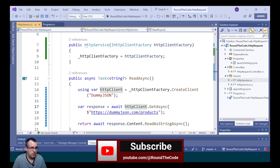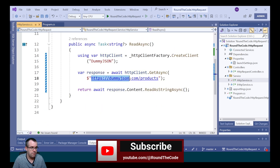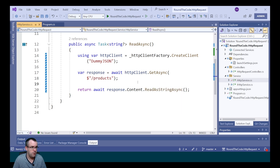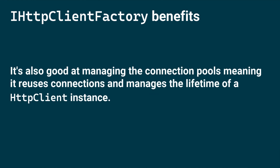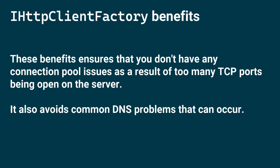We now only need to call the relative URL when making requests. IHttpClientFactory is good at managing HTTP client instances, particularly making them reusable across multiple requests. It also manages connection pools and the lifetime of HTTP client instances, ensuring no connection pool issues from too many open TCP ports, and it avoids common DNS problems.